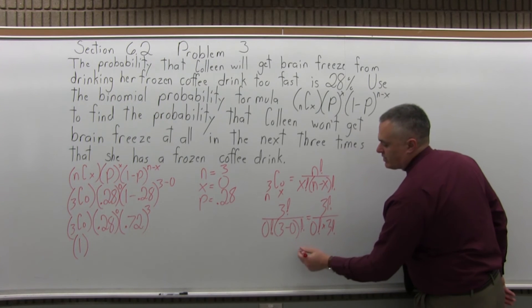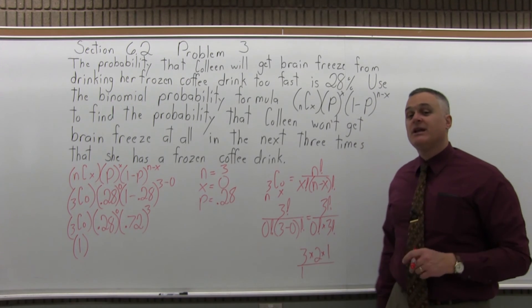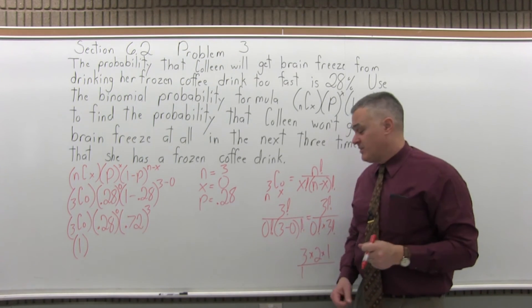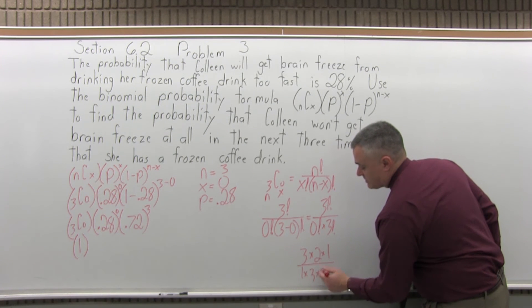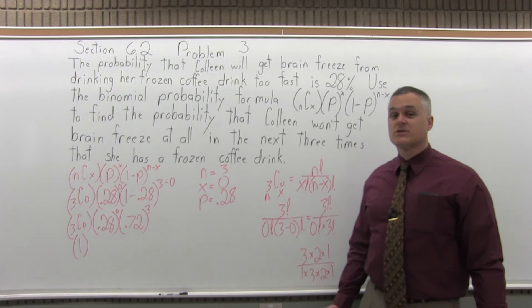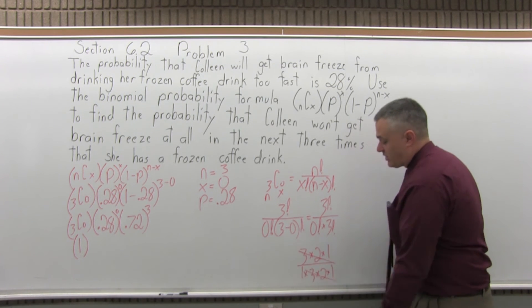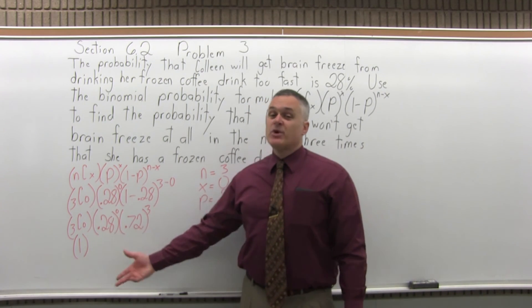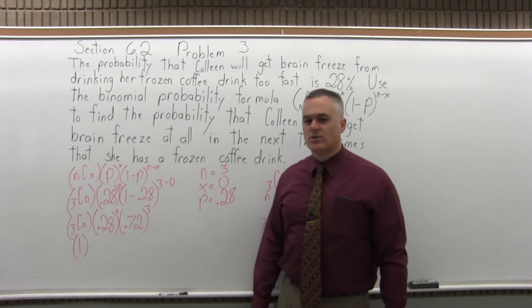So the 3 factorial on top is 3 times 2 times 1, and the denominator is 0 factorial. You have to remember, any time you have 0 factorial, the answer is not 0, it's 1. It's just defined to be 1. And then 3 factorial is 3 times 2 times 1. So if you multiply it all out, you get 6 over 6, which reduces to 1. Or you just cancel 3, 2, 1 on the top, 3, 2, 1 on the bottom. You have the same thing over itself, and you do get 1. So I remembered it was going to be 1, but if you don't remember, you waste maybe 20 or 30 seconds, not the end of the world.